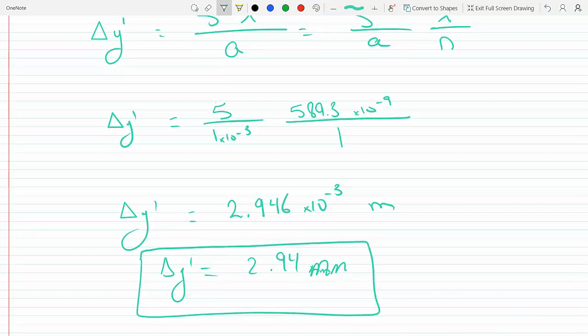So just to rephrase, there are actually three factors that affect the fringe separation. There's the distance from the screen. If you increase it, then the fringe separation is increased.